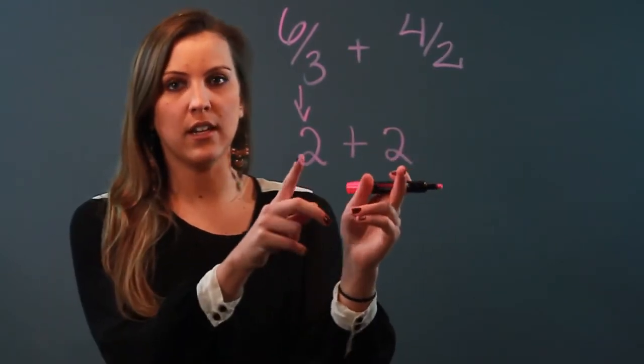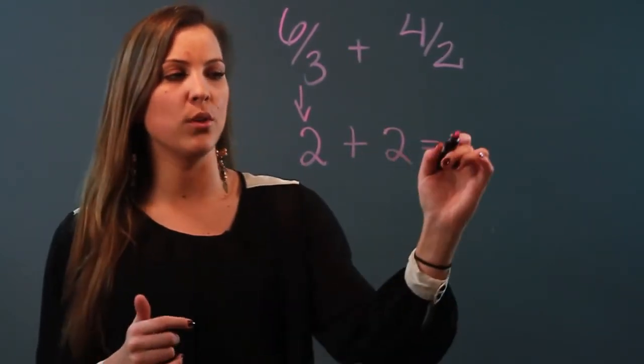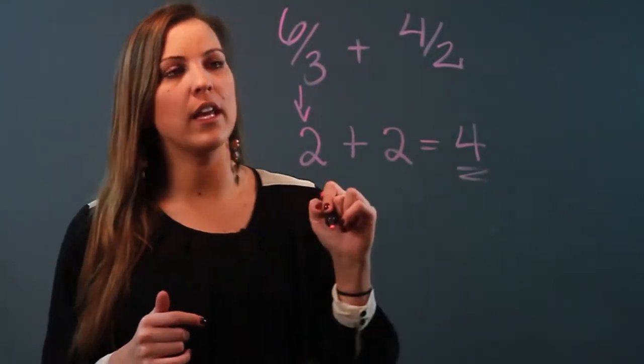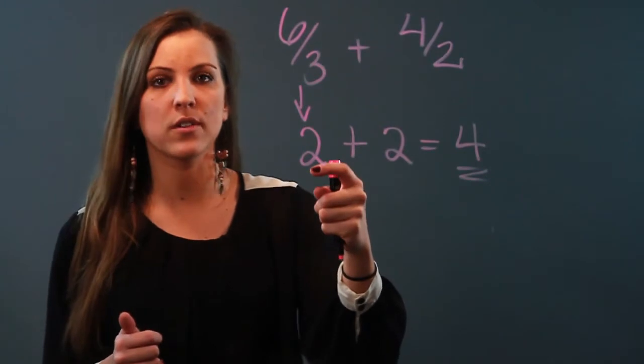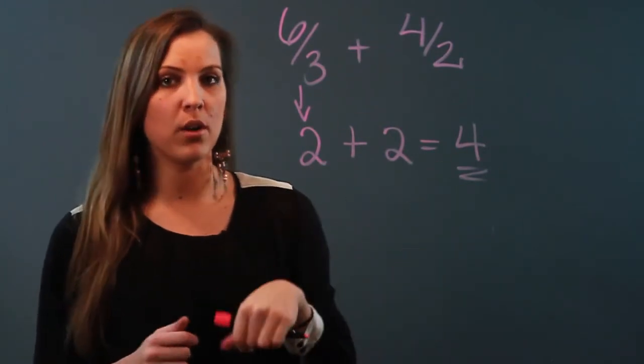So now they are indeed integers, right? And 2 plus 2 is 4. So if you're talking about fractions that are actually integers, then go ahead and divide and make them integers first and then add them to get your number.